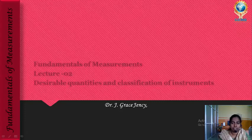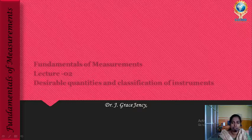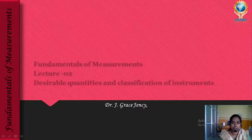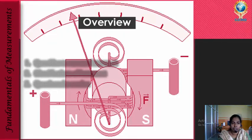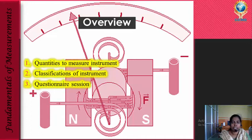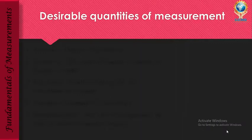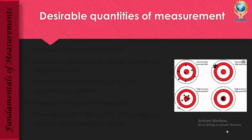Hello everyone, welcome to the video presentation on desirable quantities and different classification of instruments. In today's video lecture, we will see what are the quantities used to measure an electrical instrument and what are the different classifications of instrument. The desirable quantities of measurement are: number one, accuracy.